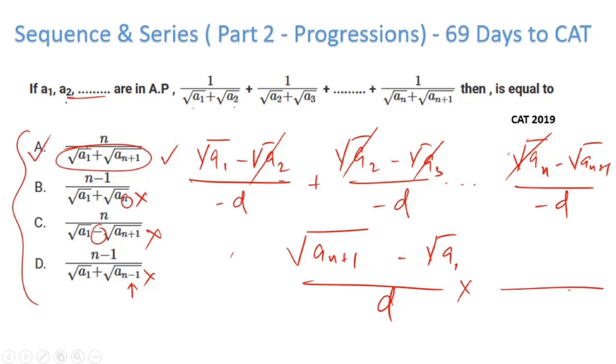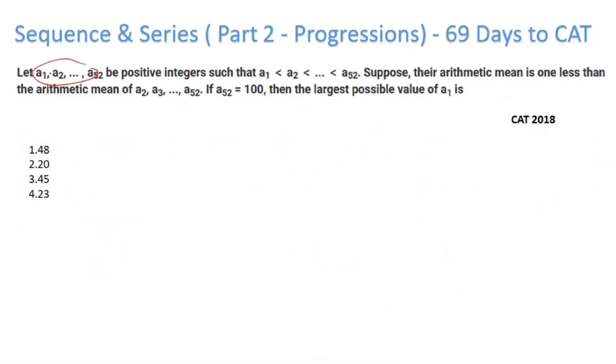There are some numbers a₁, a₂ till a₅₂. Arithmetic mean is 1 less than arithmetic mean of a₂, a₃, etc. Let's say the sum of a₂ to a₅₂ is x. So what is the original? If a₂ to a₅₂ is x, earlier I had 52 terms.